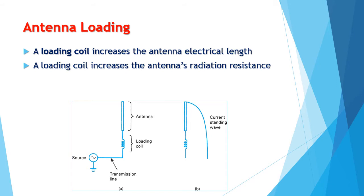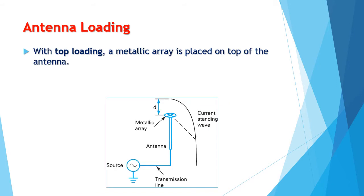As you can see in the image, the loading coil is connected in series with the antenna. And although this has a minimal effect on the physical length, the electrical length of the antenna is increased. With top loading, a metallic array that resembles a spoked wheel is placed on top of the antenna. The wheel increases the shunt capacitance to ground, reducing the overall antenna capacitance, which has the same effect as the loading coil previously mentioned.